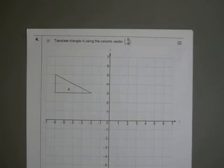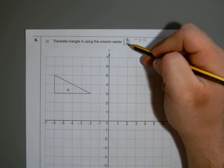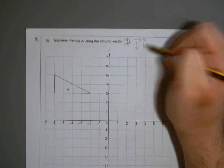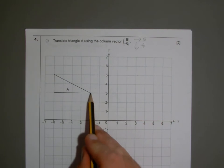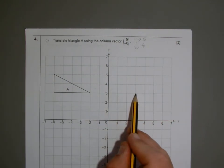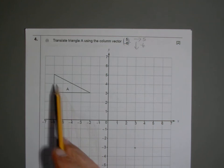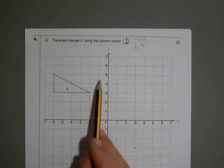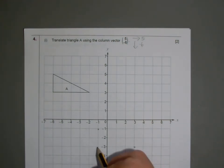Translate the triangle using this column vector. We've got to go across five in a positive direction. But notice the bottom number is negative six, so we've got to go down six. Focus on the corner points: across five — one, two, three, four, five — and then down six — one, two, three, four, five, six. So the corner point will go there. Do the same with each corner point: across five, down six. The other corner point is pretty obvious where it goes.